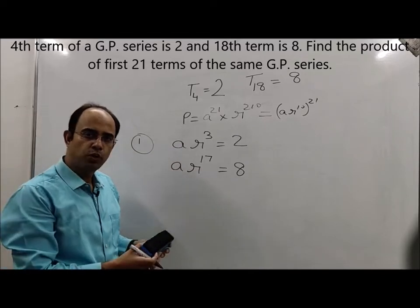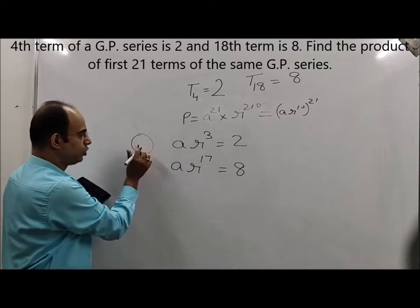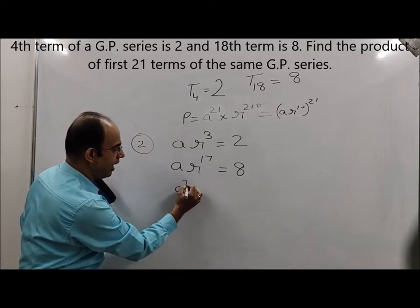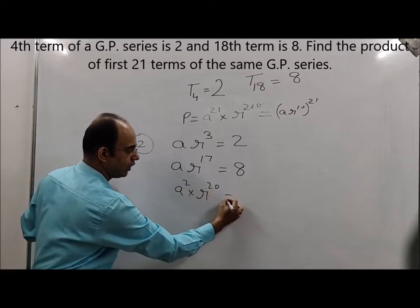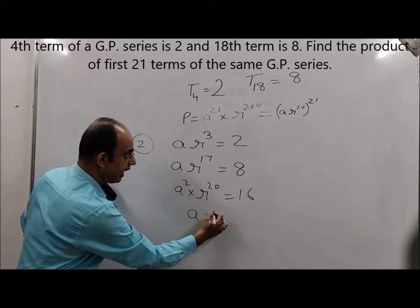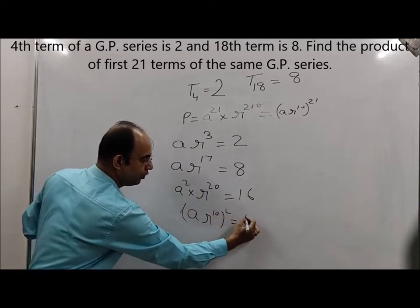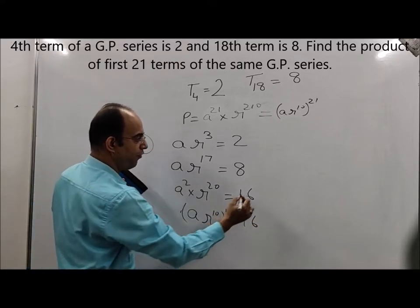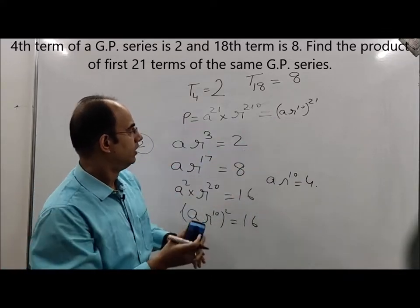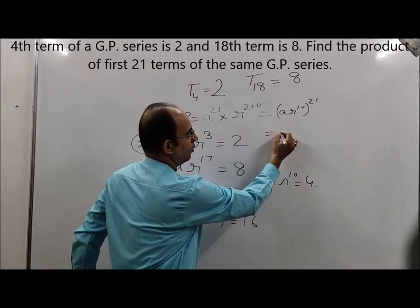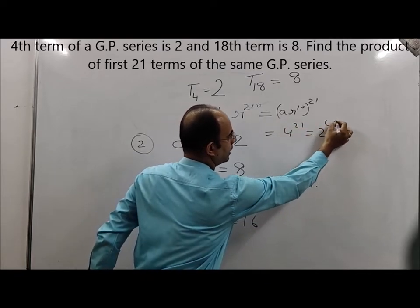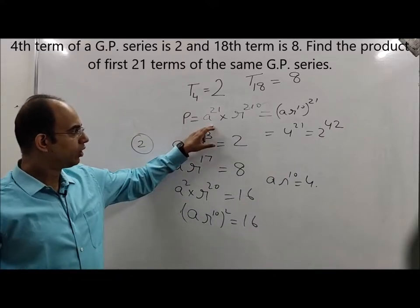This is the second method. Multiplying the two equations a·r³ = 2 and a·r¹⁷ = 8, we get a² · r²⁰ = 16. This can be written as (a·r¹⁰)² = 16, therefore a·r¹⁰ = 4. Putting this value into (a·r¹⁰)²¹, we get 4²¹, which is equal to 2⁴².